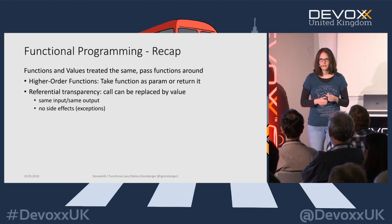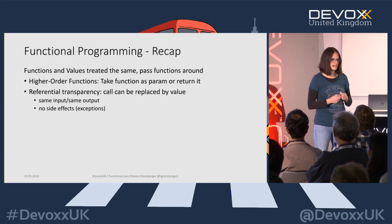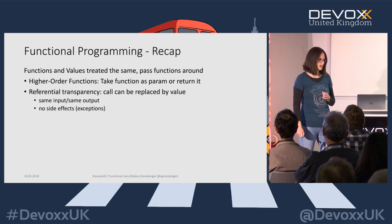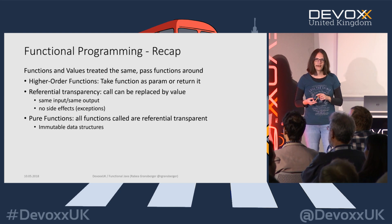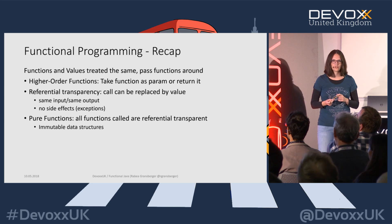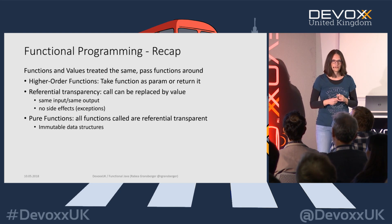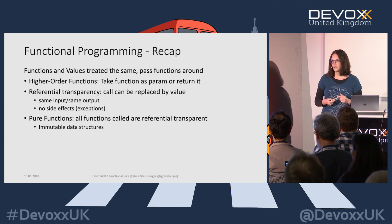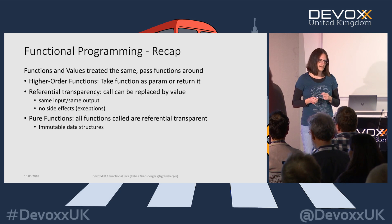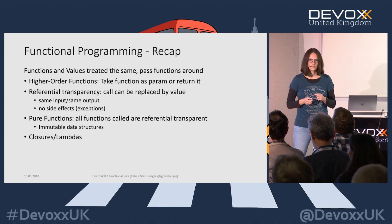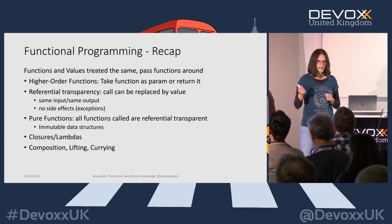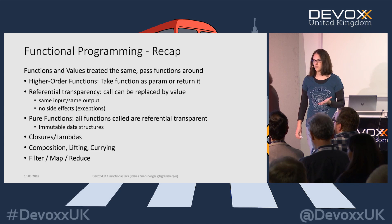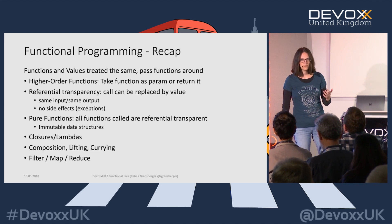A function shouldn't have any side effects — throwing an exception is a side effect and breaks referential transparency. Pure functions are functions that only call other referentially transparent functions, mostly working with immutable data structures. Closures and lambdas are also a feature we all know nowadays. Composition, lifting, and currying — we'll have examples in a minute. Filter, map, and reduce are also important features, and we all know we have those on streams now.